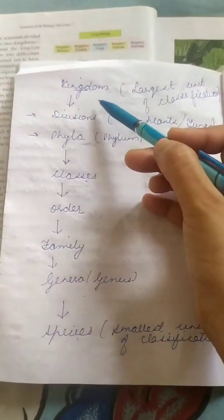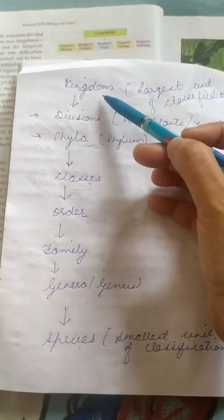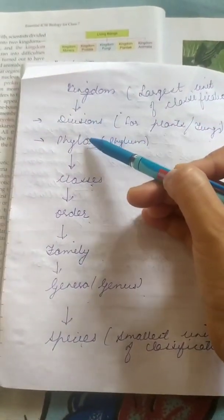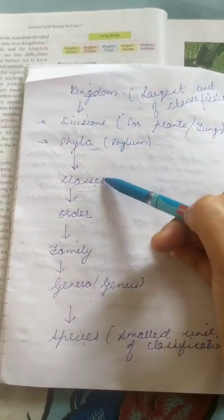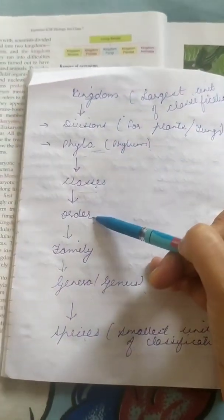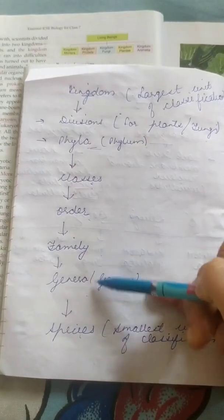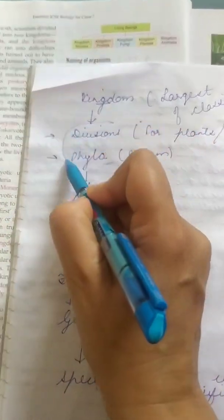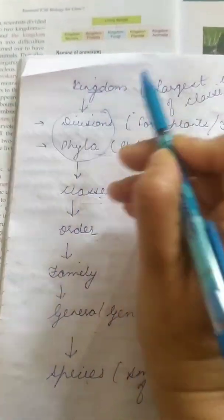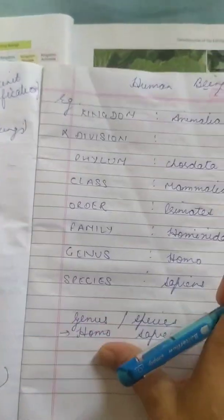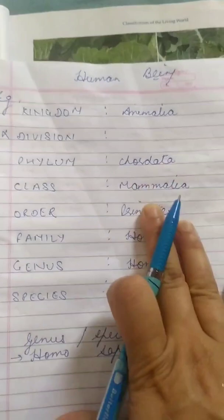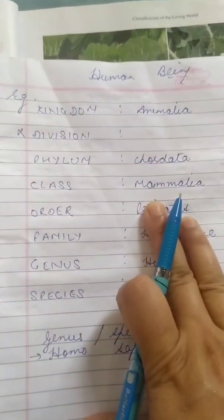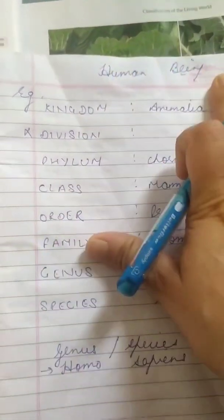So to recap: each kingdom is divided into division or phyla, classes, order, family, genera, and species. I am going to give you one example for human beings.